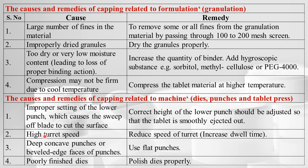High turret speed causes rapid relaxation or expansion of the tablet during ejection — reduce the speed of the turret or increase the dwell time. Deep concave punches or beveled edge faces may result in capping — use flat punches. Poorly finished dies may also result in capping — polish the dies properly.